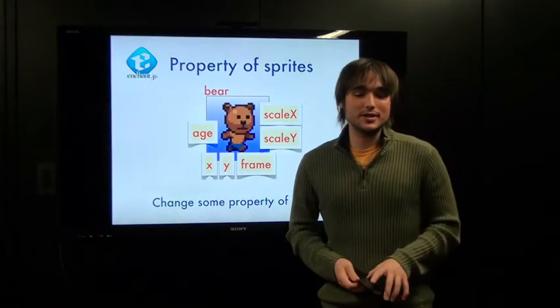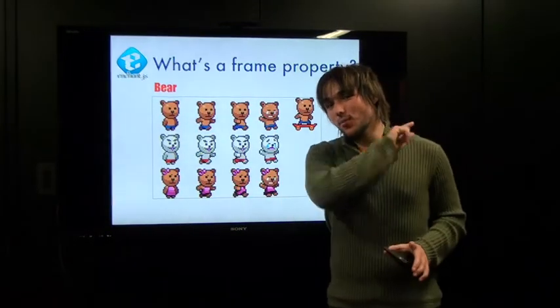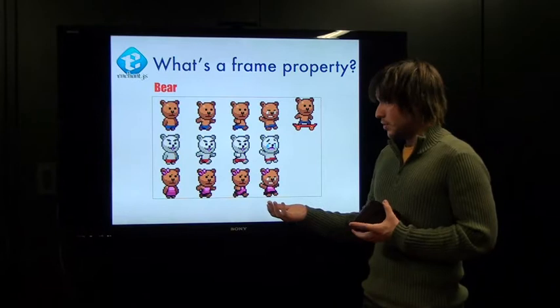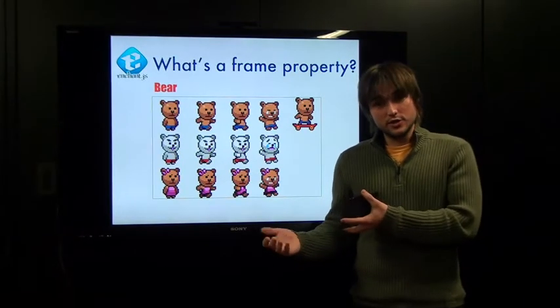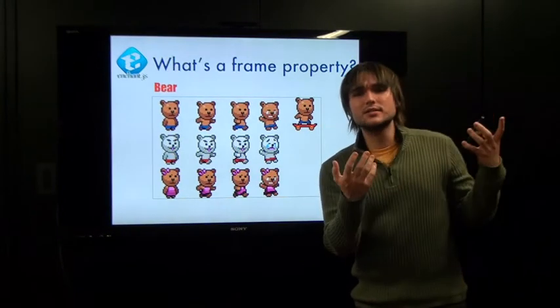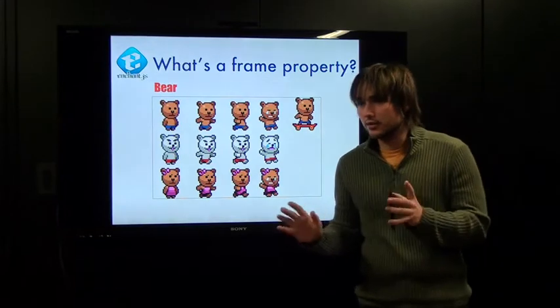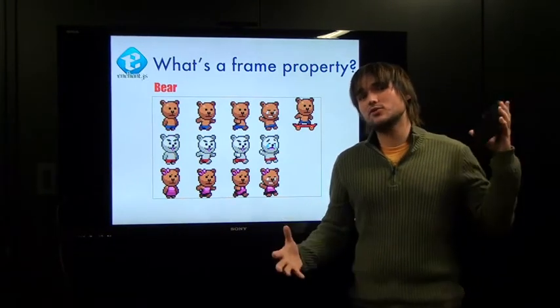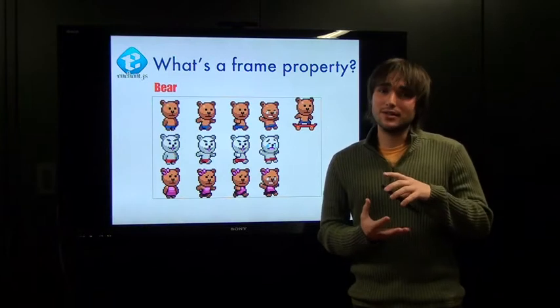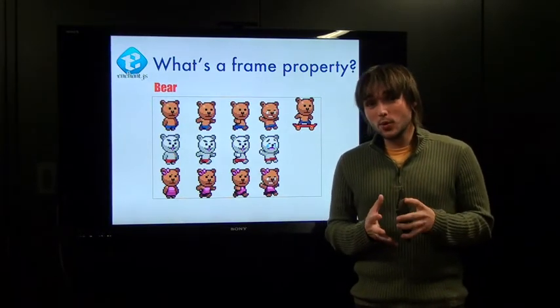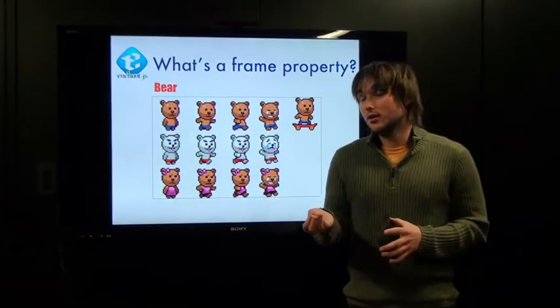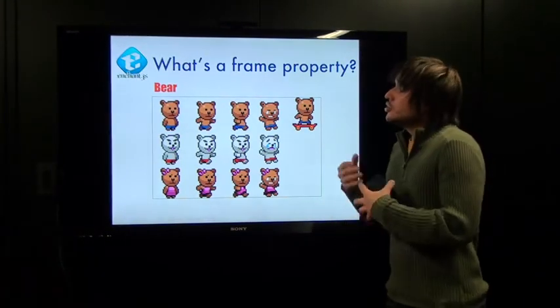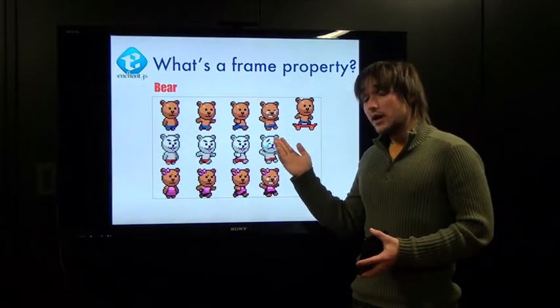But let's talk about the frame property next, because that is probably the single-handedly most important property of the sprite class. So, with sprites, we have this sheet here. When you load an image for a sprite, you're not going to have just a single image. Because, what if your sprite needs to be able to turn left or turn right or go up or go down? That is going to be represented by a different image. So, what we want to do is we want to bring all of these images together into a single image file that we call a sprite sheet.